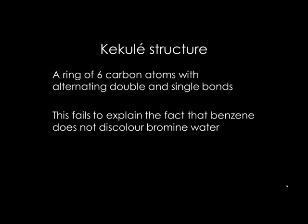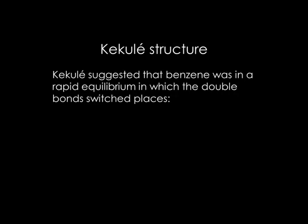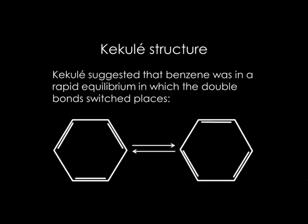In light of this, Kekulé revised his structure to suggest that benzene was in rapid equilibrium with the positions of the double bonds switched around, as can be shown here. In this case, the bromine molecule would not be polarized by the double bond before the structure changed.